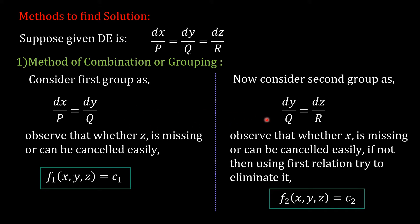If the grouping does not work, we have to combine the ratios, equate them, and then find the solution.